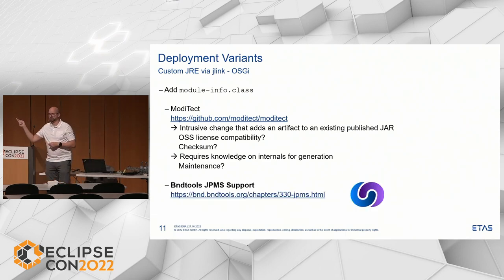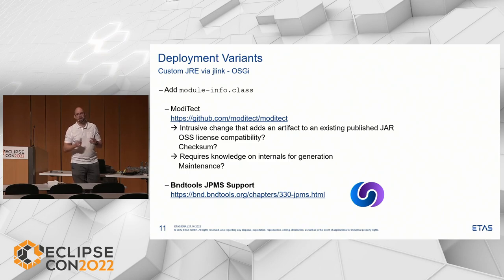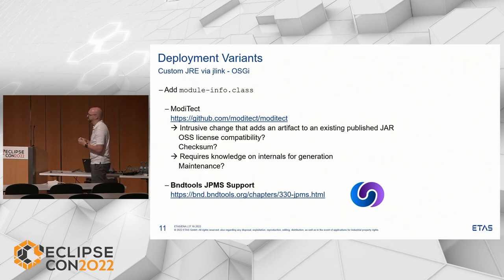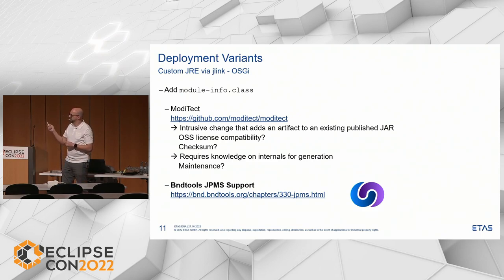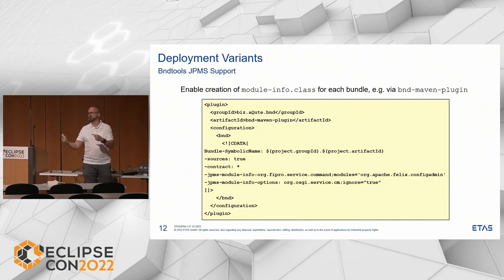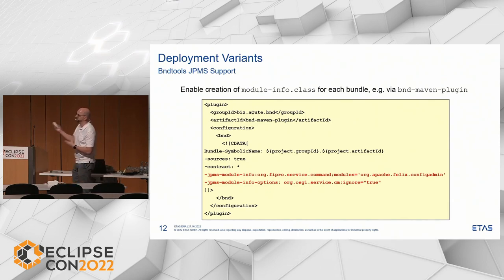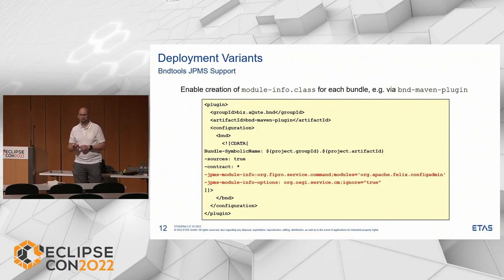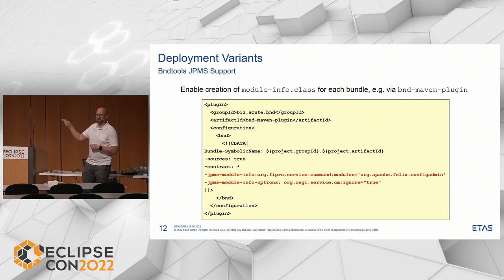I am a fan of the BND tools JPMS support — it was Ray Augé who did this a while ago, and he also created a nice example that I used as a base. This has two nice features. First, you can enable the creation of a module-info for your own bundles by simply adding an instruction to your bnd file or Maven plugin and letting it generate the module-info for you.